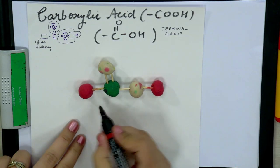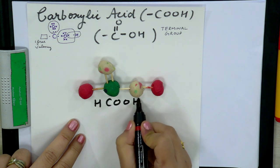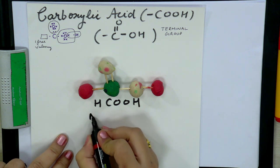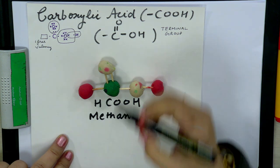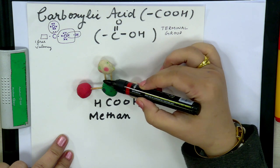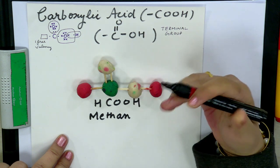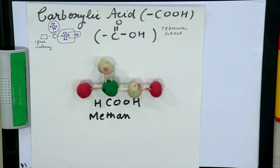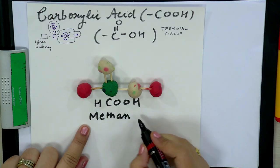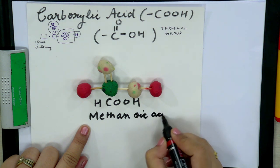The formula of the first member becomes H-C-OOH. When naming it, we write 'meth' for one carbon, then 'an' because all bonds between carbons are single bonds. Students may get confused because there is a C double bond O present, but we only consider single or double bonds between two carbons — the double bond between carbon and oxygen is not counted. The secondary suffix is 'oic acid', so the name is methanoic acid.